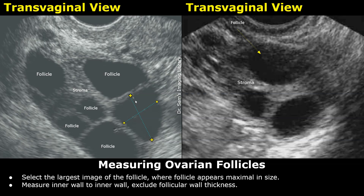Next, we place the calipers inside the follicle, measuring from inner wall to inner wall. We deliberately exclude the follicular wall thickness. This is because the clinically relevant measurement is the fluid-filled diameter, not the thickness of the follicular wall. Including the wall would falsely increase the follicle size and lead to inaccurate assessment of follicular maturity.